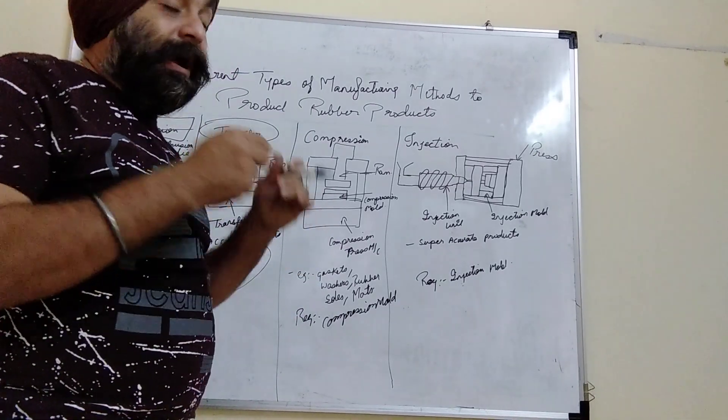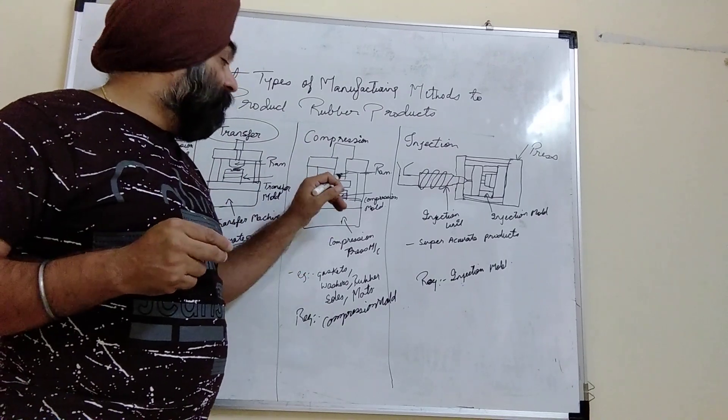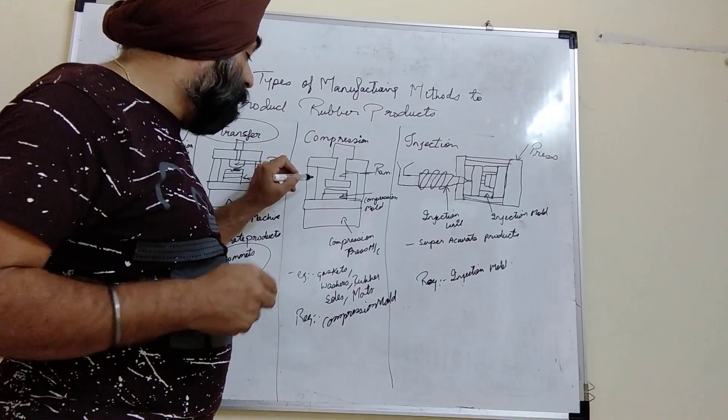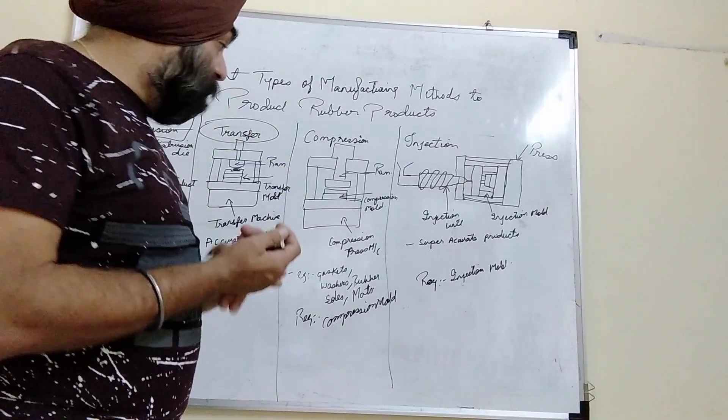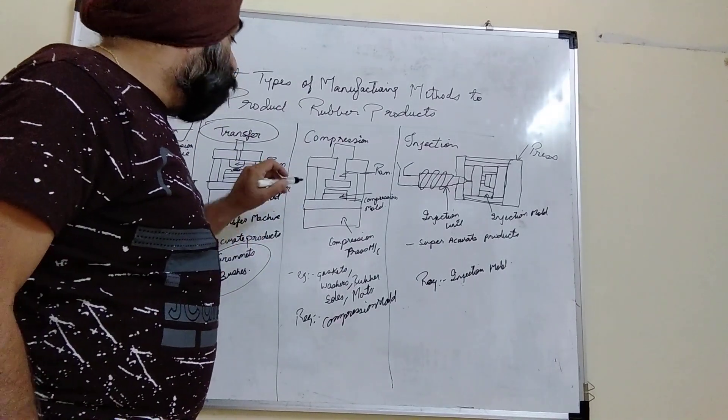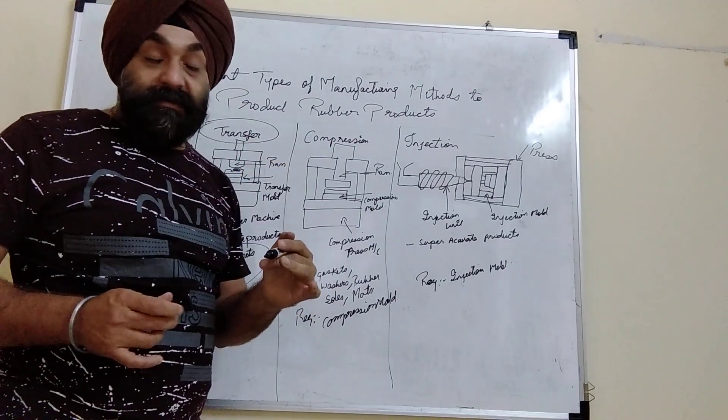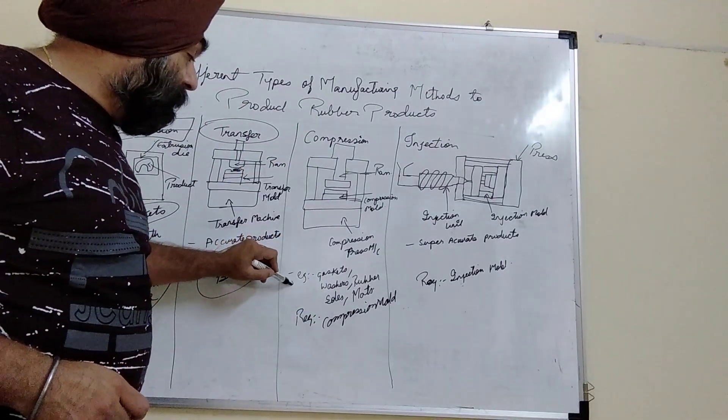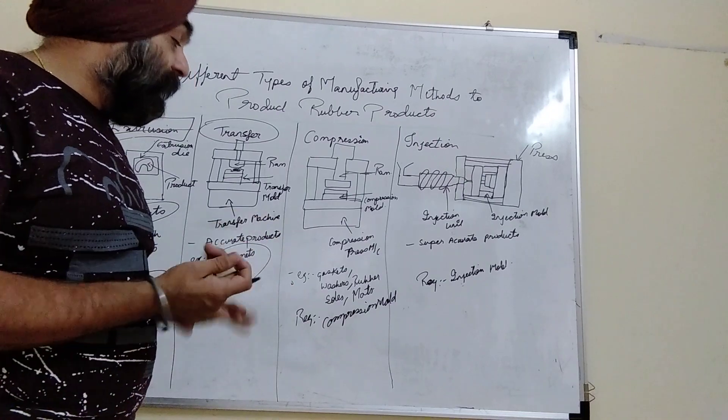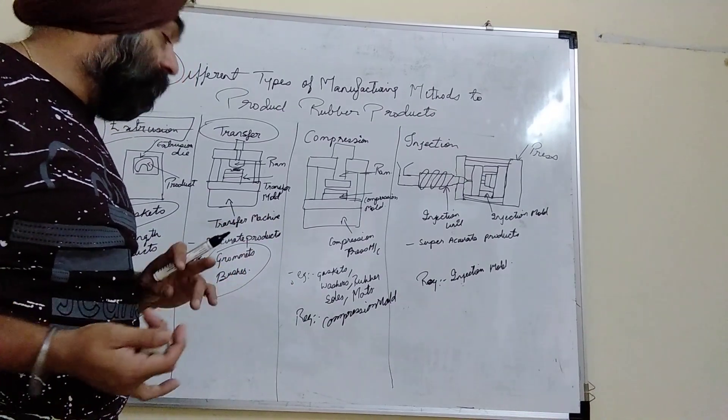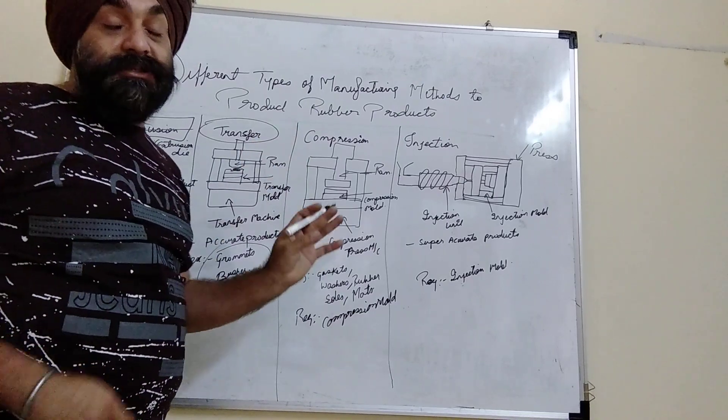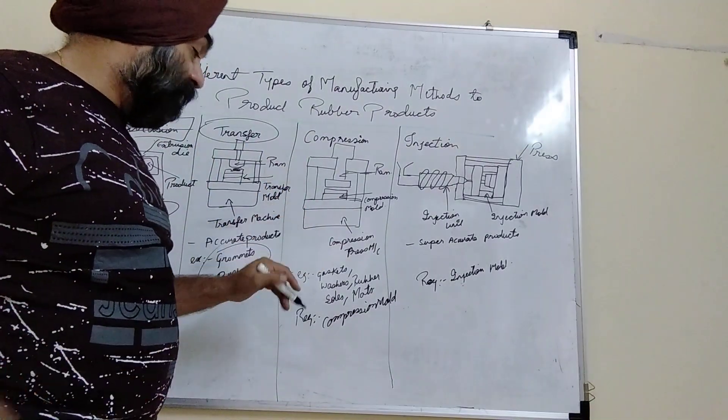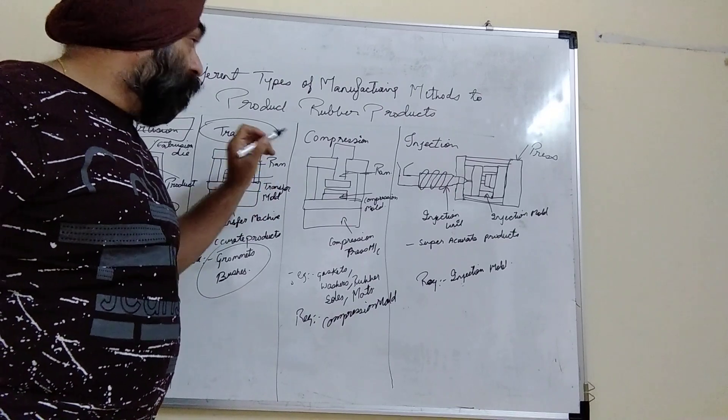The part enters the cavity and you get the rubber product. This can be multi-cavity and is the cheapest mold, but it is a slow process. The best examples of compression molding are gaskets, washers, rubber soles, and mats. This is a widely used manufacturing method in the rubber industry.